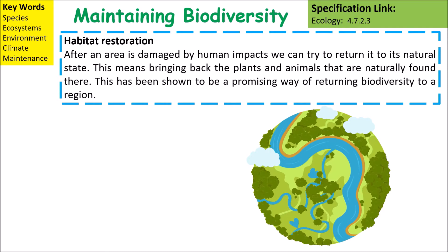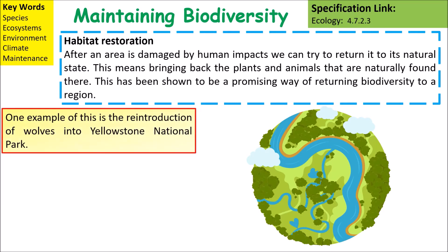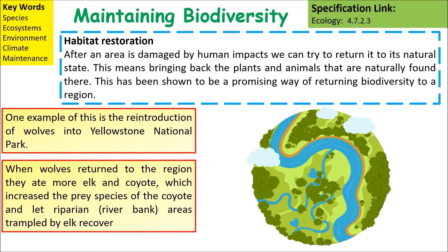Habitat restoration involves returning a damaged area back to its natural state by bringing back the plants and animals that are naturally found there. This has been shown to be a promising way of returning biodiversity to a particular region. One example is the reintroduction of wolves into Yellowstone National Park. When wolves returned, they ate more elk and coyote, which increased the prey species of the coyote and allowed different areas to recover because they were less trampled by animals like elk.